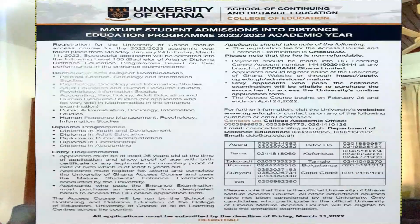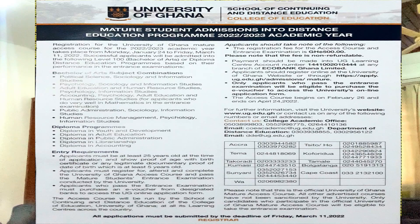The entry requirements include: applicants must be at least 25 years old at the time of application and show proof of age with a birth certificate or any legitimate documentary proof of date of birth which is at least five years old. Applicants must register for, attend, and complete the University of Ghana access course, and pass the mature student entrance examination conducted by the university.